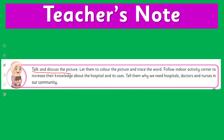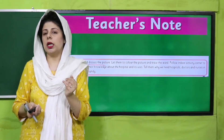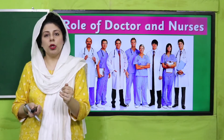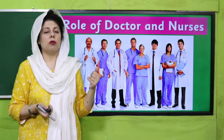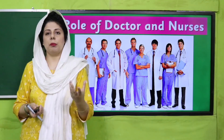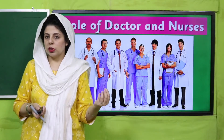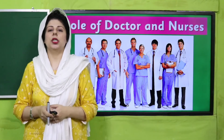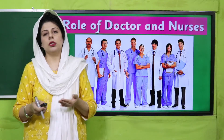Aapne talk and discuss karna hai jo kitaab mein di gayi picture hai, obviously woh hospital ki picture hai. Us mein color nahi hai — bachhe color karenge, lekin woh coloring ka task unka individual later on hoga. Abhi ye baatceet karenge hospital mein hone waali activities ke baare mein, doctors and nurses, safai karne waale, computers, pharmacy. Yeh tamaam cheezein hain. Aapne unki vocabulary build up karni hai, general knowledge pe focus karna hai, aur unki spoken skills ko active karna hai. Aaj is lesson ki main skills hain listening and speaking.